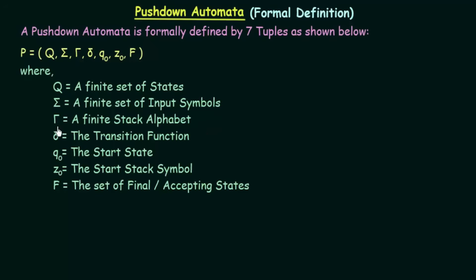Uppercase gamma is the tuple used to denote the finite stack alphabet — the symbols that are present in the stack. Then we have delta, which represents a transition function. In finite automata also we had delta for the transition function, and in push down automata this transition function will have a specific meaning which will be explained further.